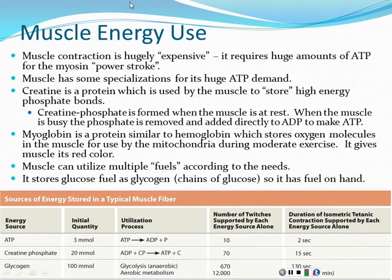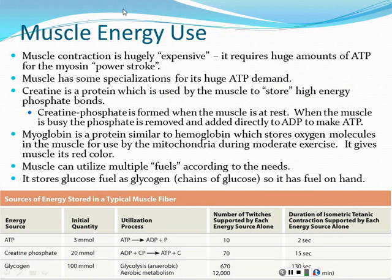Muscles use a lot of fuel. Muscle contraction is hugely expensive — muscles blow through ATP like nothing else in the body. They are a primary user of all the energy you take in from food. Because of that, muscle has some specializations for ATP management.